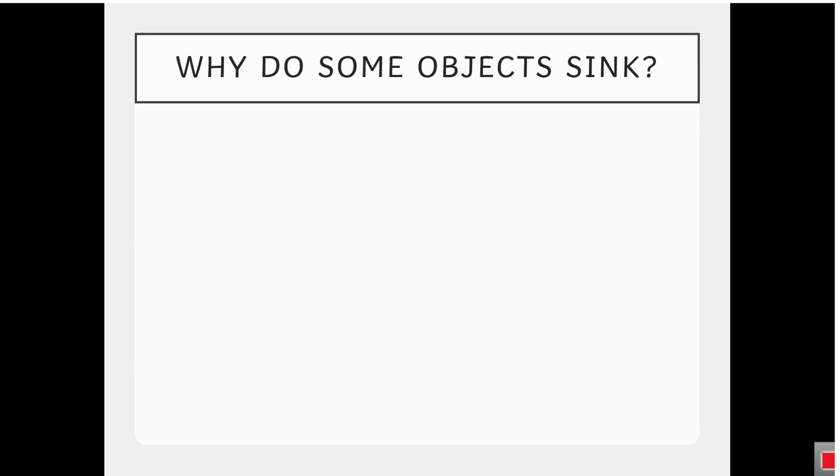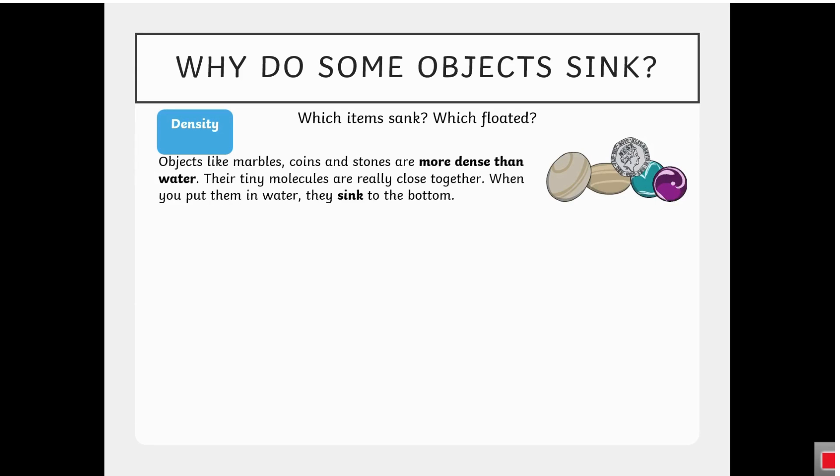Why do some objects sink? Which item sank? Which floated? Density. Objects like marbles, coins, and stones are more dense than water. Their tiny molecules are really close together. When you put them in water, they sink to the bottom.